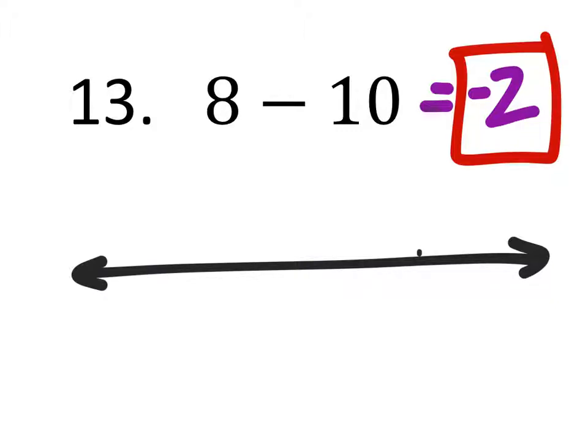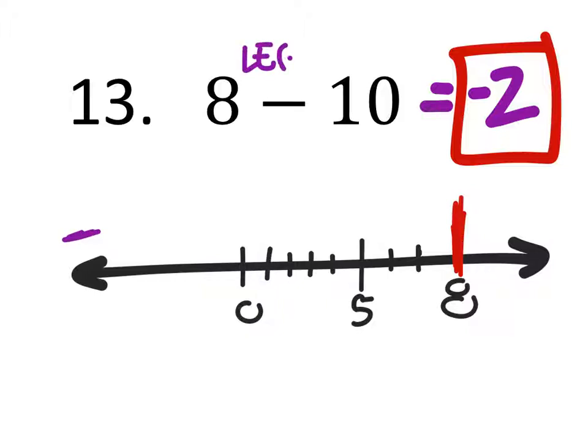So if I started at 0, let's go to 8 because that's where we should start: 1, 2, 3, that's 8. Well, starting at 8, remember the negative or minus direction is to the left. So this is telling us we could go to the left 10 units.